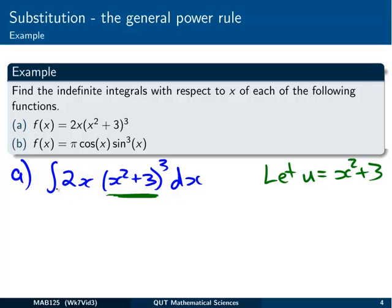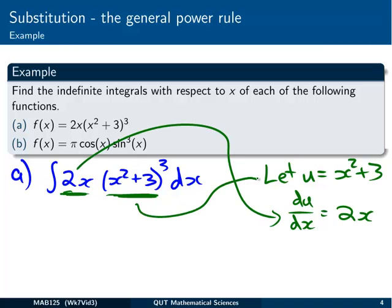Well then I can see over here I've got something which looks like the derivative of that function. Let's just check that. du/dx for x squared plus 3 is actually 2x. Okay, and that's exactly what I've got there. 2x, the derivative and the function.